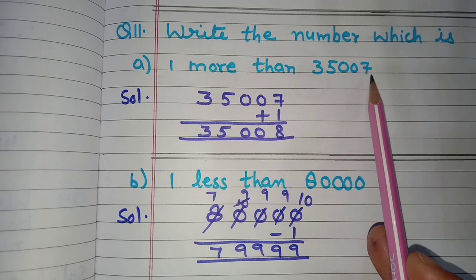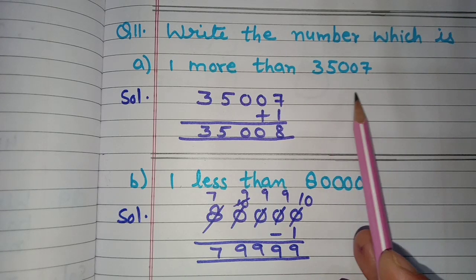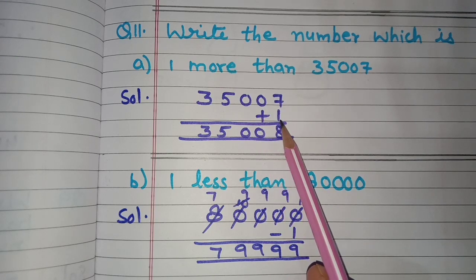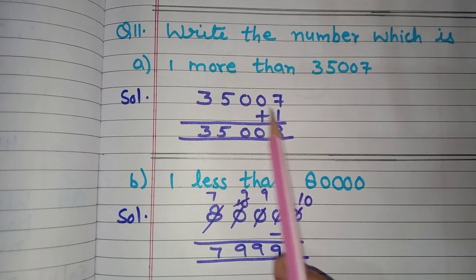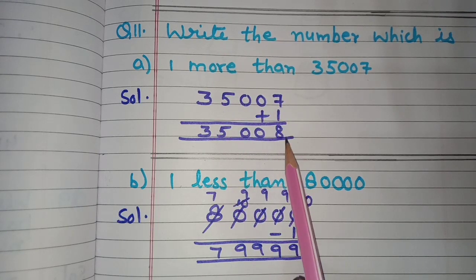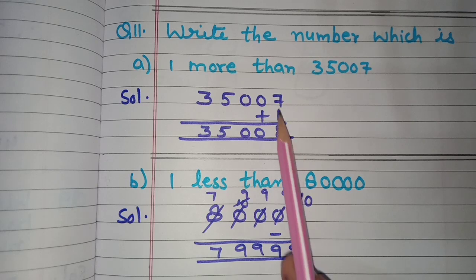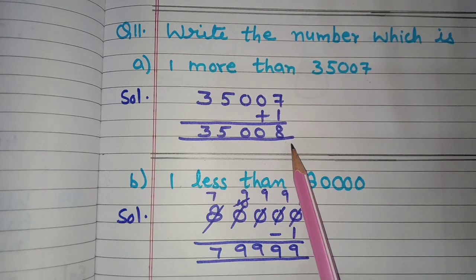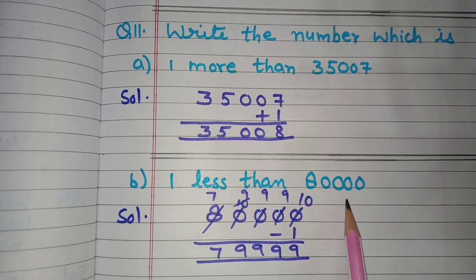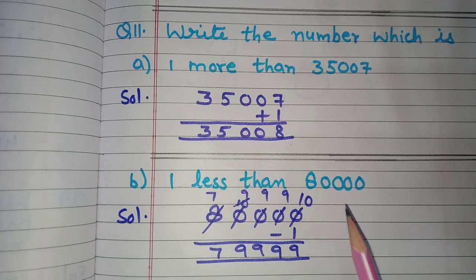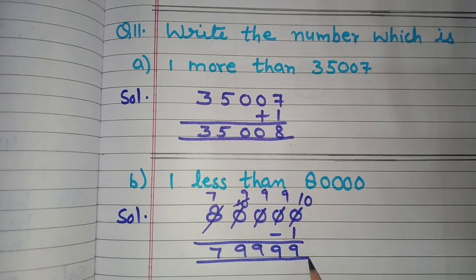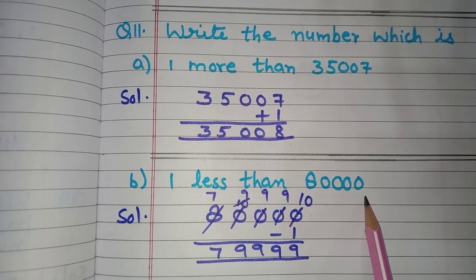Next is question number eleven: write the number which is 1 more than 35,007. To find 1 more, we add 1 to the given number: 35,007 plus 1 equals 35,008. Next, 1 less than 80,000: to find 1 less, we subtract 1 from 80,000, giving us 79,999.